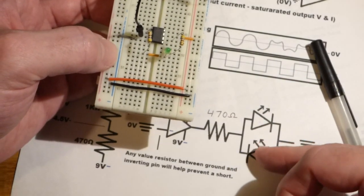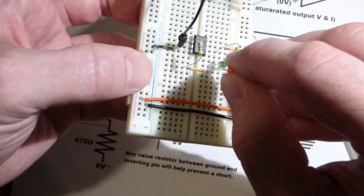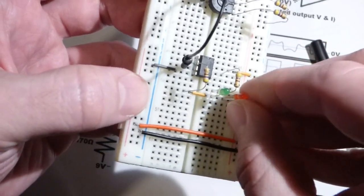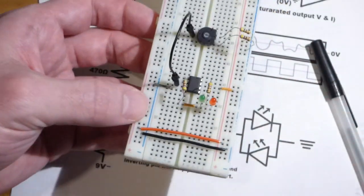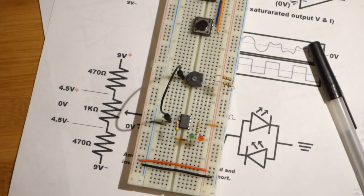When we have red, we'll know that the output of the trim pot is more negative than ground. That's it for the circuit. We just have to apply the battery to it now.